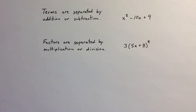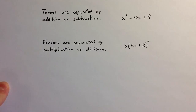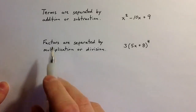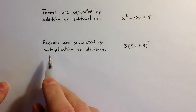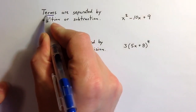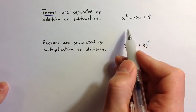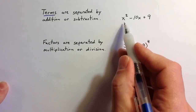In a world full of mathematical expressions, there are terms and there are factors. Let's talk about the difference between terms and factors. In mathematical expressions, terms are separated by subtraction or addition.